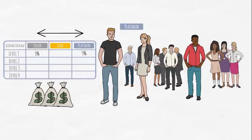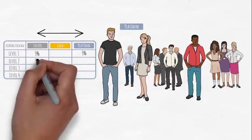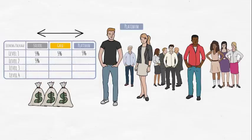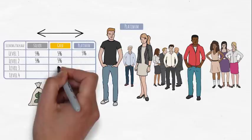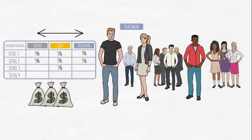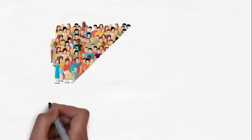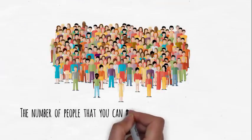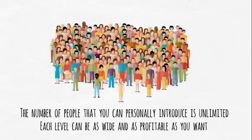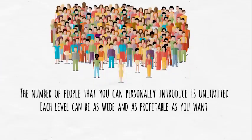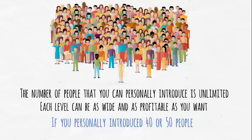With silver, you receive 5% of each person's development bonus down to two levels. With gold, your 5% covers everyone in your network down to Level 3. With platinum, you receive 5% of everyone's development bonus right down to Level 4. And that could be a lot of people. You're probably seeing a lot of advantages to being a platinum distributor by now. The number of people that you can personally introduce is unlimited. So each level can be as wide and as profitable as you want to make it. Imagine what your income will look like if you personally introduced 40 or 50 people.